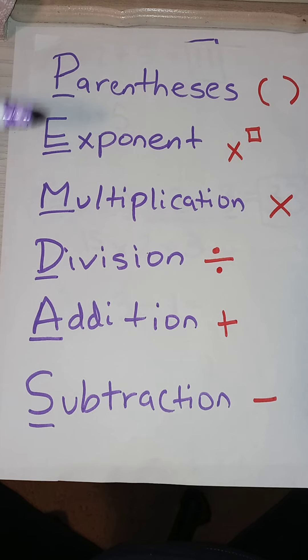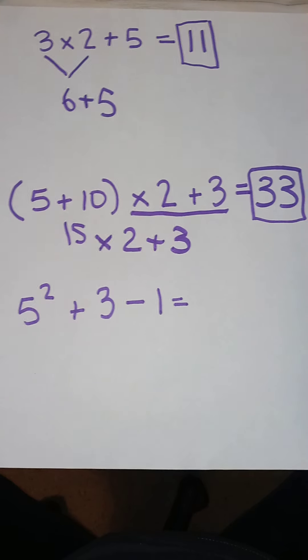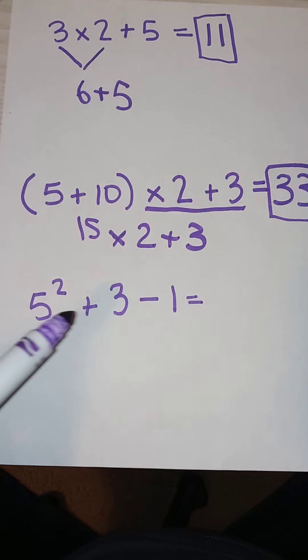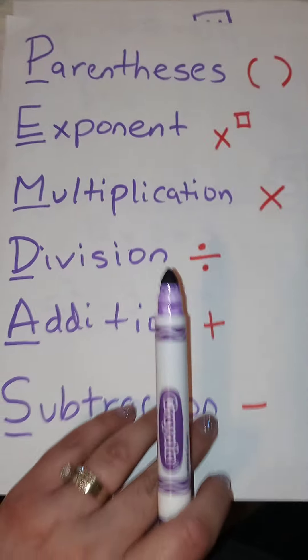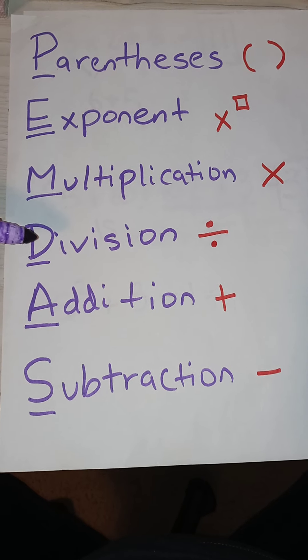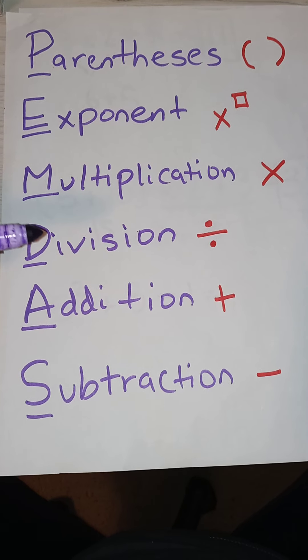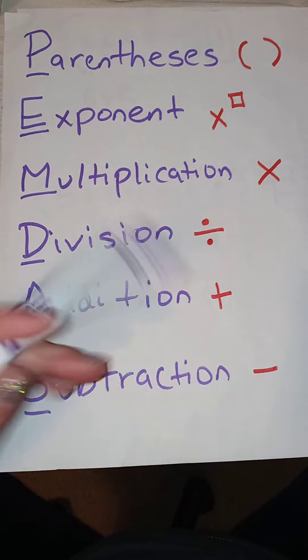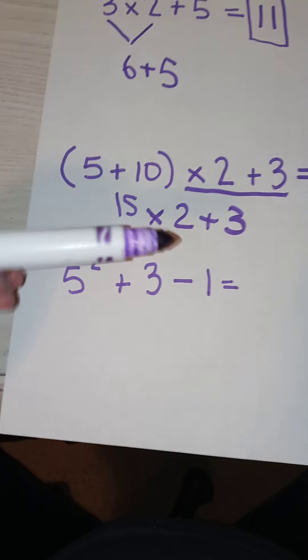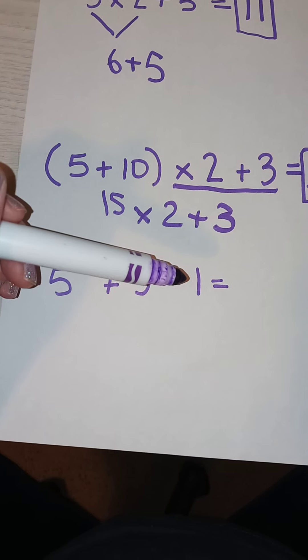And, after the exponent comes multiplication. We don't have multiplication here. So, we skip multiplication and go to the next one, which is division. We also don't have division. So, we do addition and then subtraction.